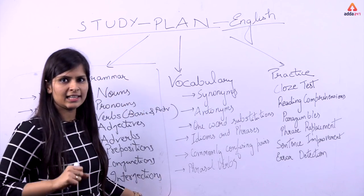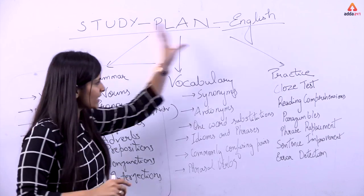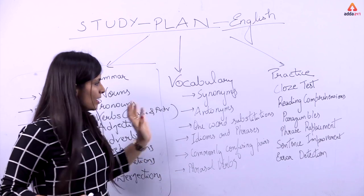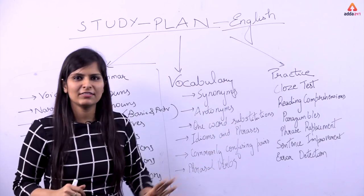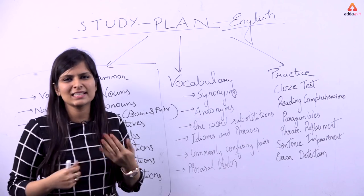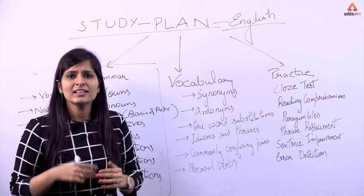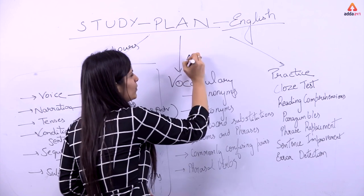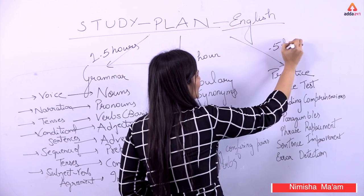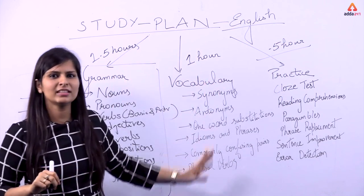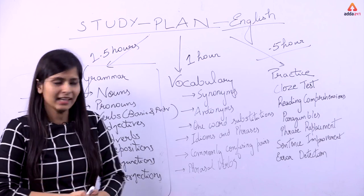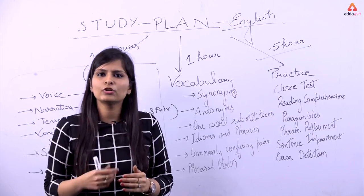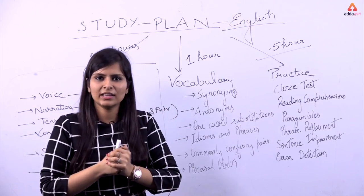So, to get the highest marks in English in the exam, you need command on all these topics. Now, what is the strategy? For 4-5 months of preparation — covering PO exams, SSC, and all exams — the daily strategy is: 1.5 hours for grammar, 1 hour for vocabulary, and 0.5 hours for practice. That is a total of 3 hours for English. If you give this much time to grammar, vocabulary, and practice every day, you can easily attain very good marks in your coming exams. Thank you.